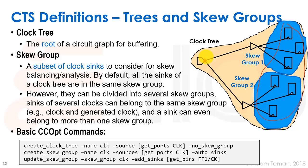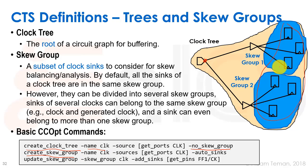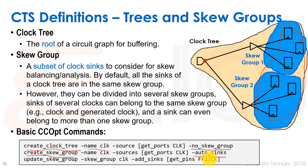The basic CC opt commands are: create_clock_tree, which defines the clock tree. Without the -no_skew_group option, a skew group with the same name is automatically created including all the flip-flops. You can also use -no_skew_group and then separately use create_skew_group with a name specifying which clock sinks are included. Using -auto_sinks adds everything downstream of the source to the skew group. Sometimes we want to separate the two. The update_skew_group command lets you add specific sinks — like a particular clock pin of a flip-flop — to a skew group.